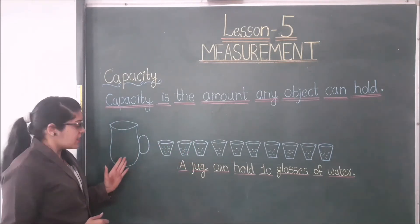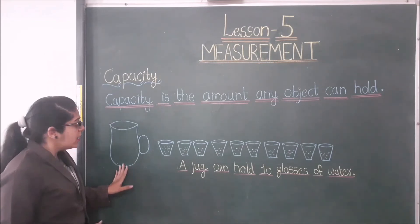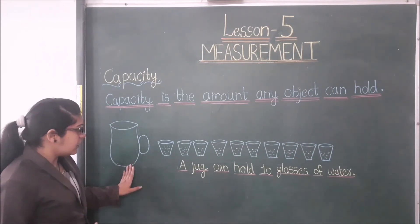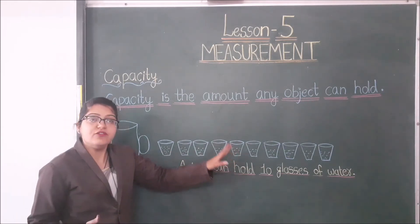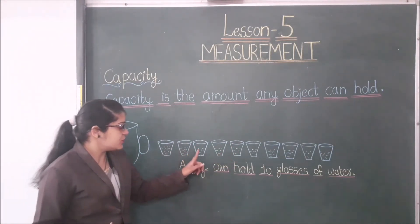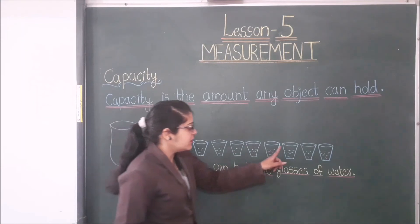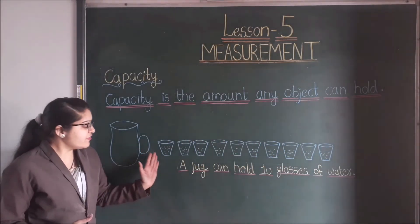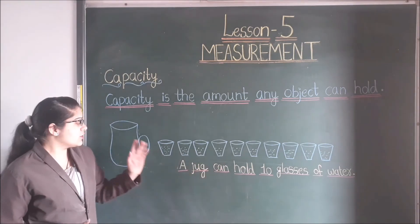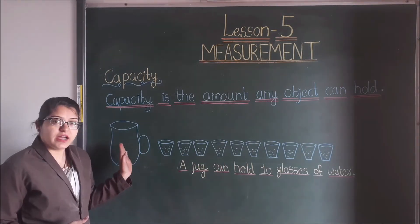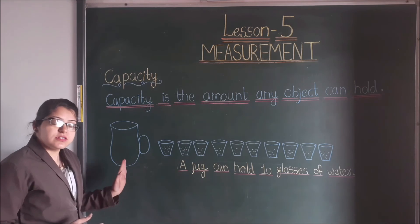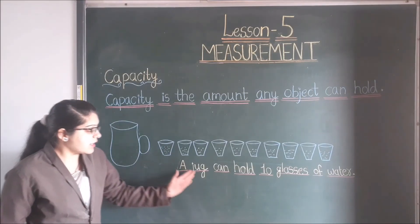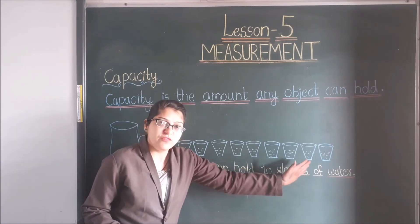Here I am taking an example. This is a jug. A jug can hold how much water? A jug can hold 10 glasses of water — 1, 2, 3, 4, 5, 6, 7, 8, 9, 10. If we put all 10 glasses of water in this jug, it can hold all 10. So this is the capacity of this jug — a jug can hold 10 glasses of water.